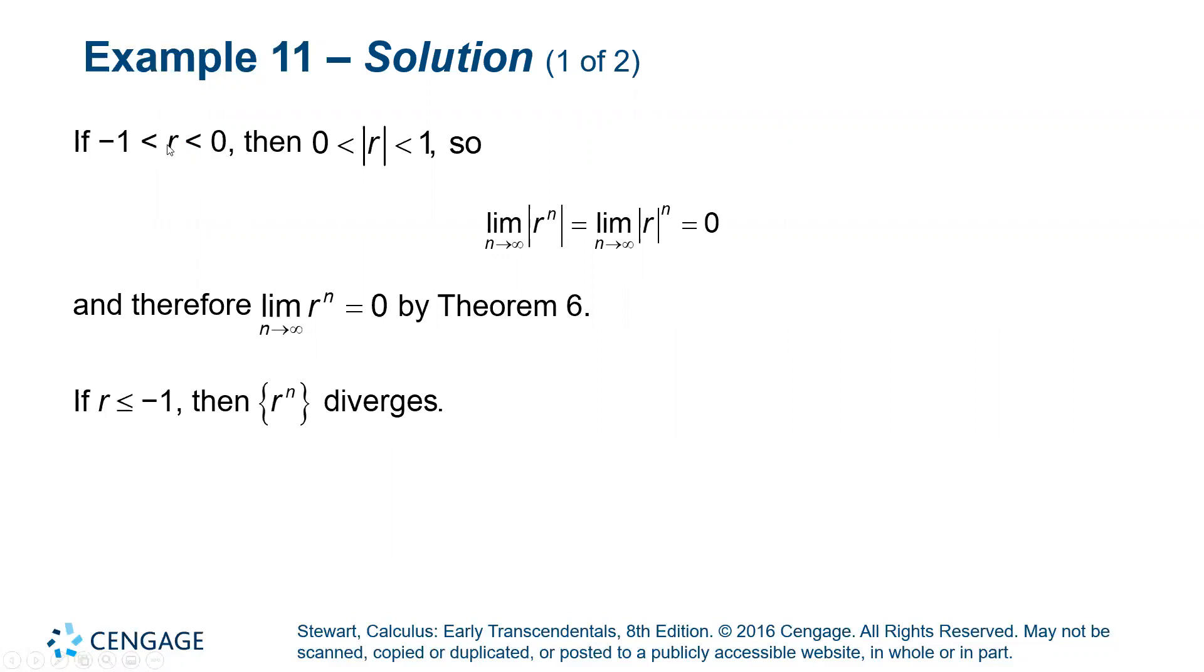Now, what about negative numbers? If R is between zero and negative one, then the absolute value of R is between zero and one. And we already know from the previous slide that that limit is zero.